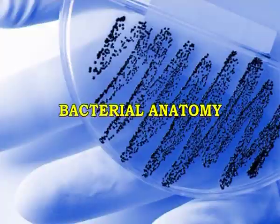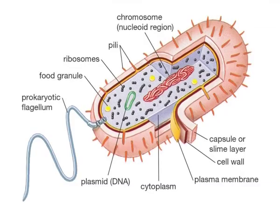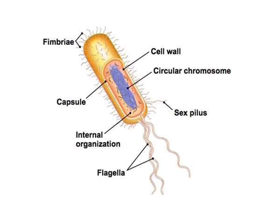The outer layer or cell envelope of bacteria consists of two components: the rigid cell wall and an underlying cytoplasmic or plasma membrane. This cell envelope encloses the protoplasm, which comprises cytoplasm, cytoplasmic inclusions including the mesosomes, ribosomes, inclusion granules, vacuoles, and a single circular chromosome of deoxyribonucleic acid — the DNA. Besides these essential components, some bacteria may possess additional structures such as capsule, flagella and fimbriae.